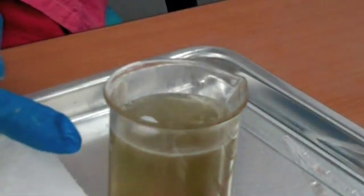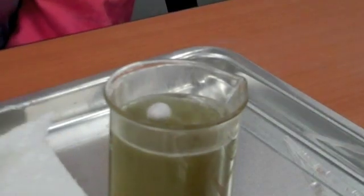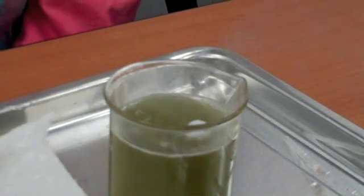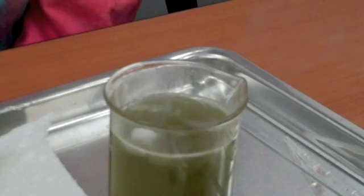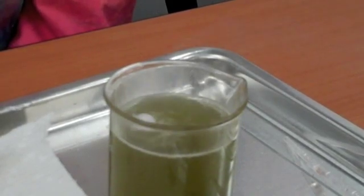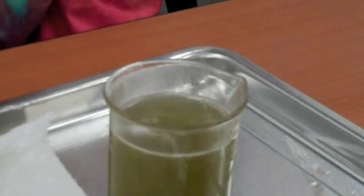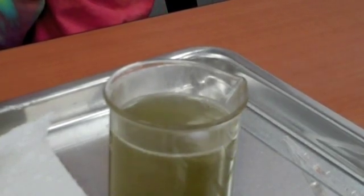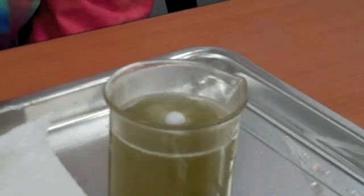You can see that it's turning green because it's turning it into a base, excuse me, the opposite of an acid. And it's getting the sodium so hot that it's melting a little bit and turning spherical.